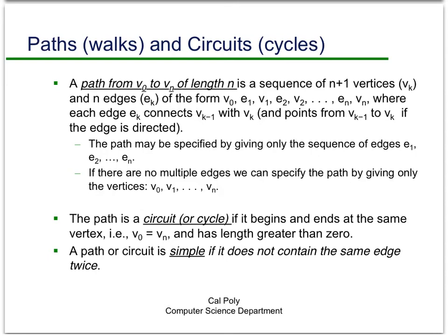So before we get started solving the problem, I need a couple of definitions. These are important definitions that get used all the time. A path from one vertex V sub 0 to another vertex V sub n of length n is written as a sequence of n plus 1 vertices and n edges. Notice there's one less edge than there are vertices.